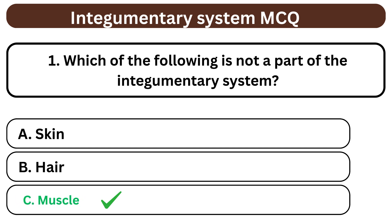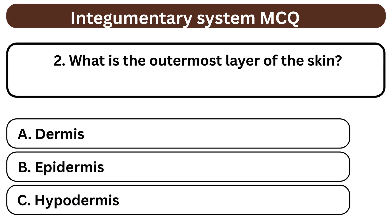Question 2. What is the outermost layer of the skin? A. Dermis. B. Epidermis. C. Hypodermis. The answer is B. Epidermis.